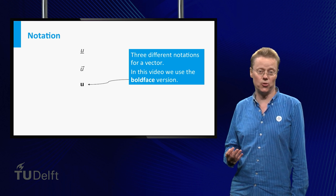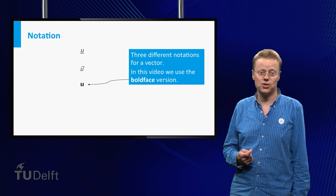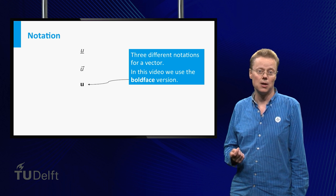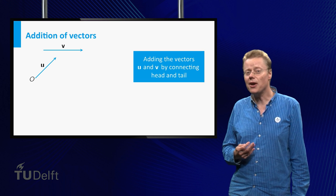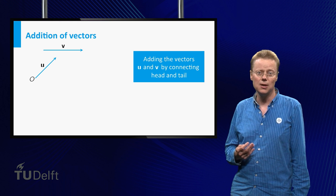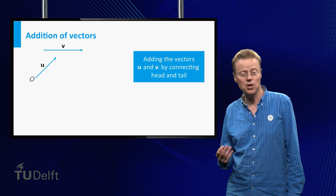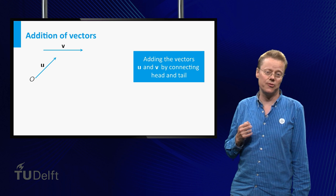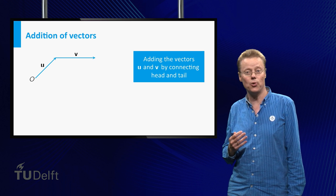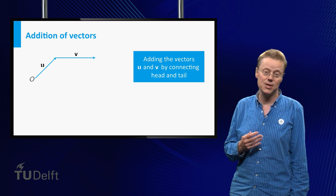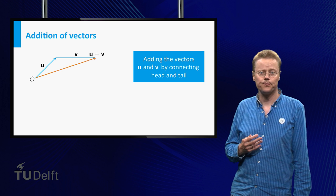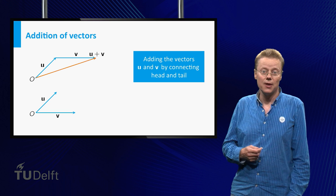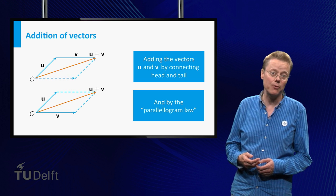In this video we use the boldface notation. Remember that this is just a convention, so don't panic when you see people using other ways to indicate the difference between a scalar and a vector. Since two vectors are considered equal whenever their length and direction coincide, adding two vectors can be done by shifting the second vector such that its tail starts at the head of the first vector. In practice, if you want to add two vectors, you usually first shift their starting points to the origin. Then the sum of the two vectors can be obtained by using the so-called parallelogram law.